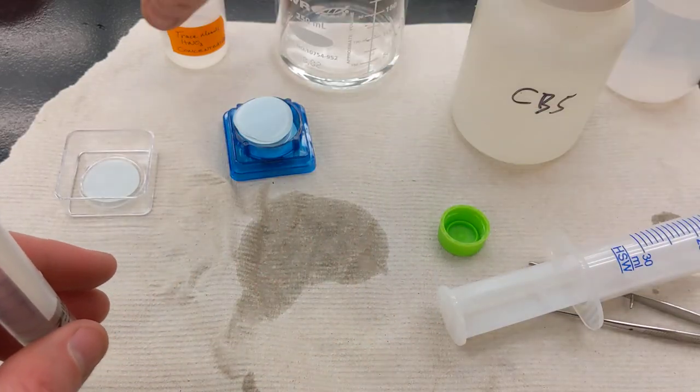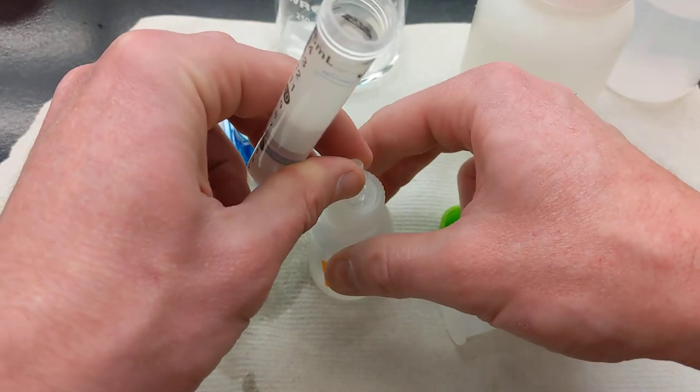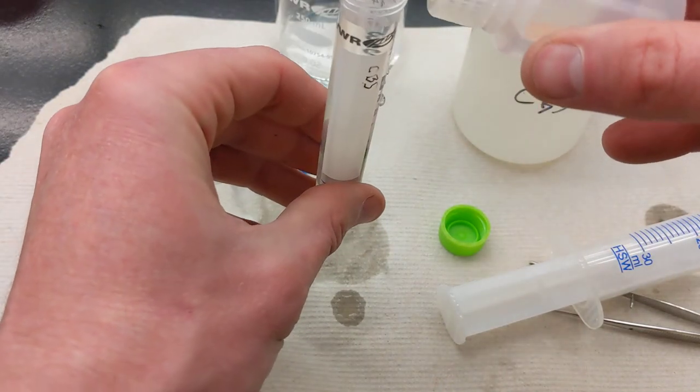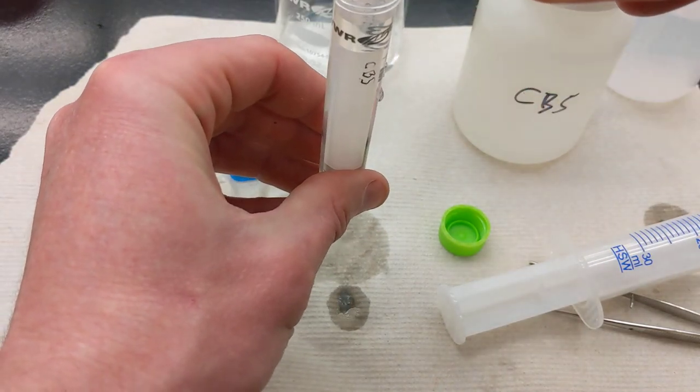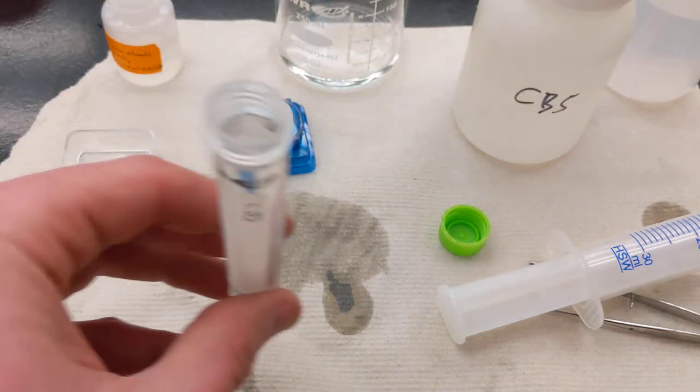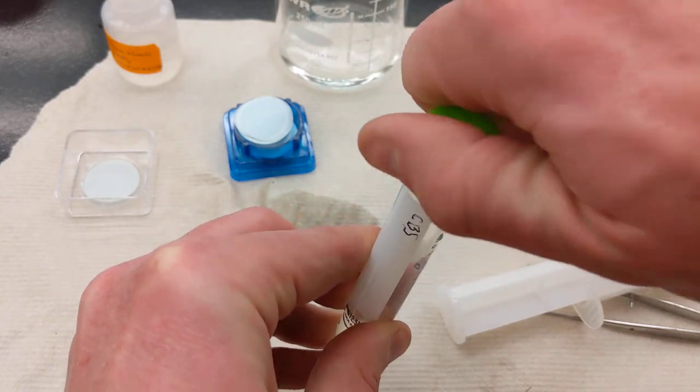And then I will take my concentrated trace metals nitric acid. Be careful here if you're not using gloves for this step. And then you'll want to add a few drops until you have reached less than pH 2.